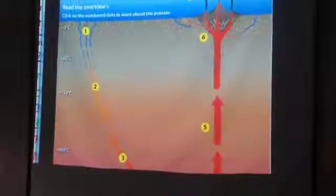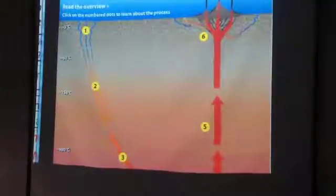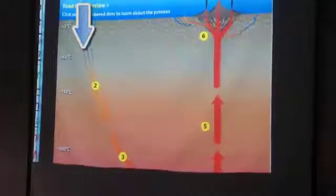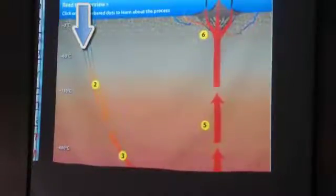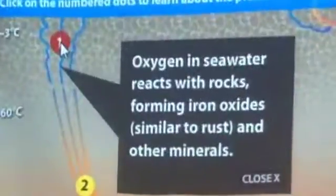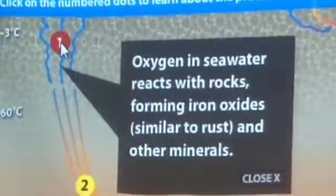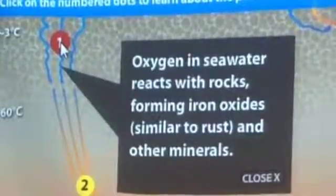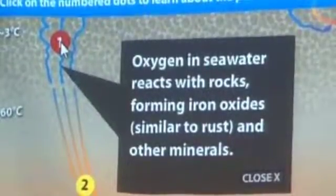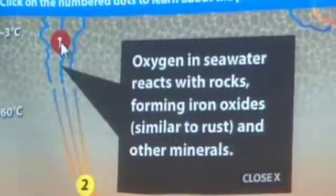You have water at the bottom of the ocean that filters down through these cracks. One of the first things that happens when the water filters down through the cracks is that the oxygen in the water starts to react with the iron in the rocks.